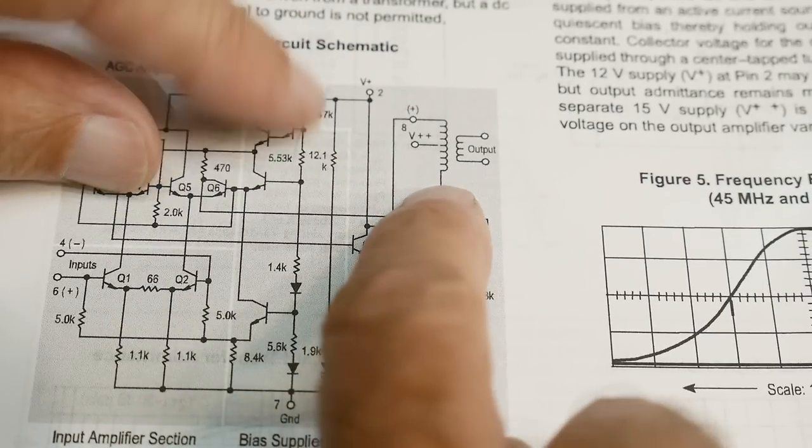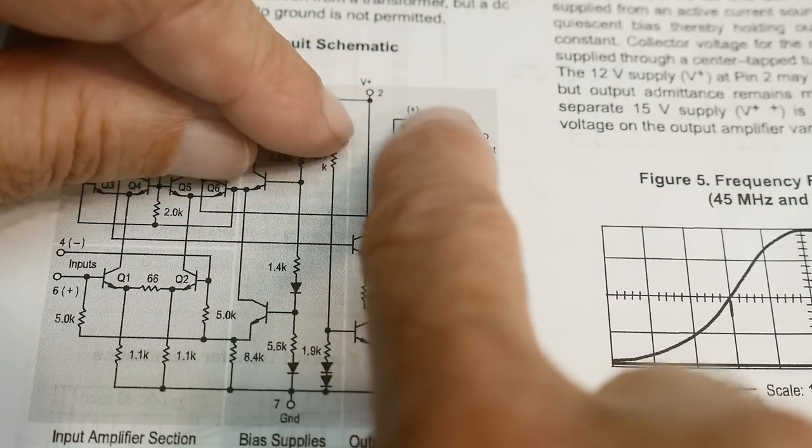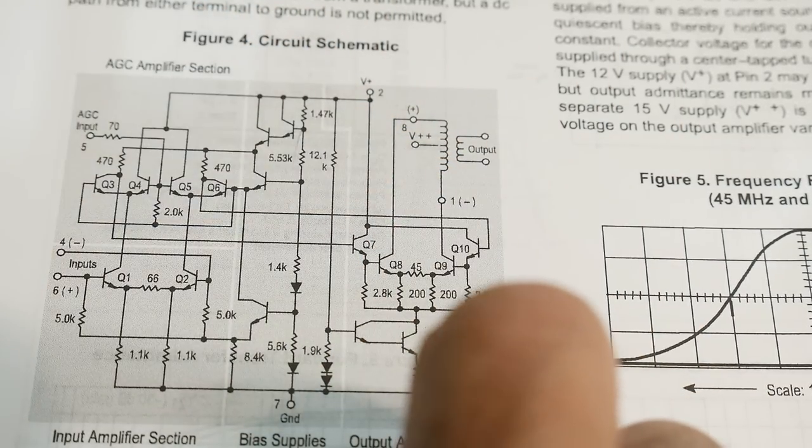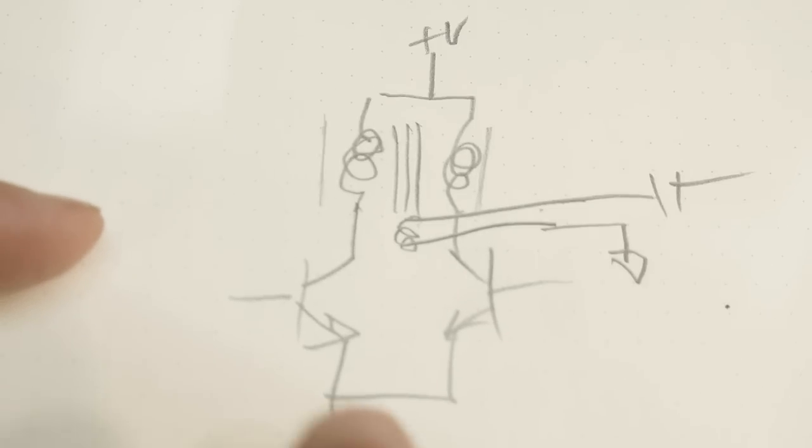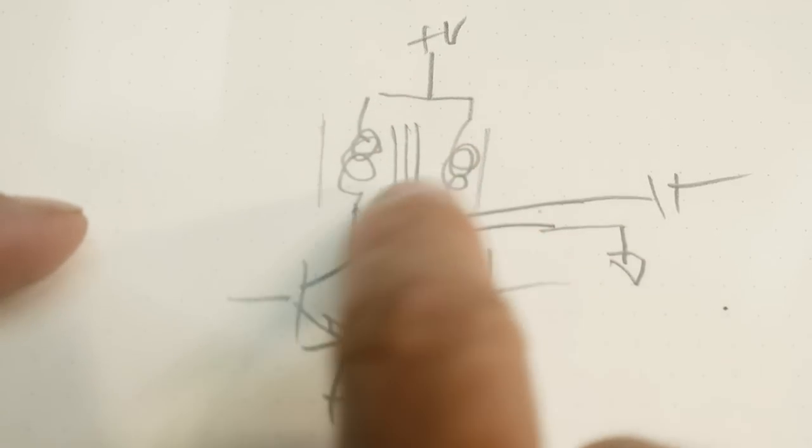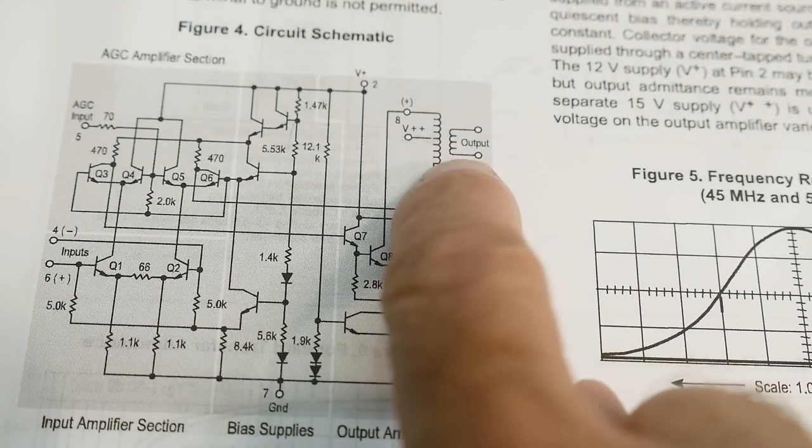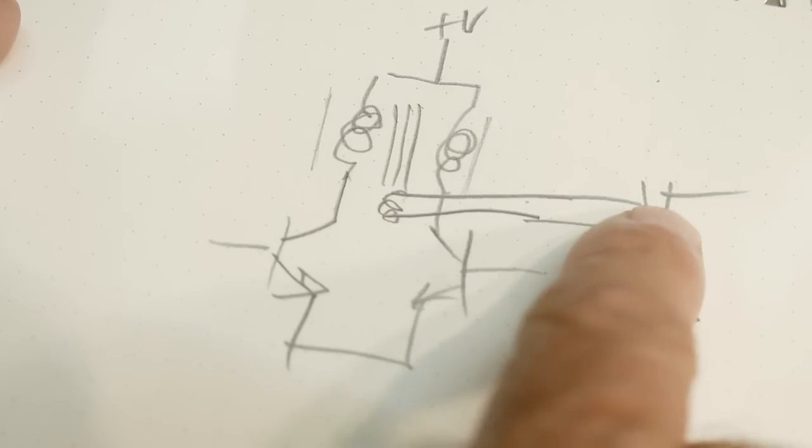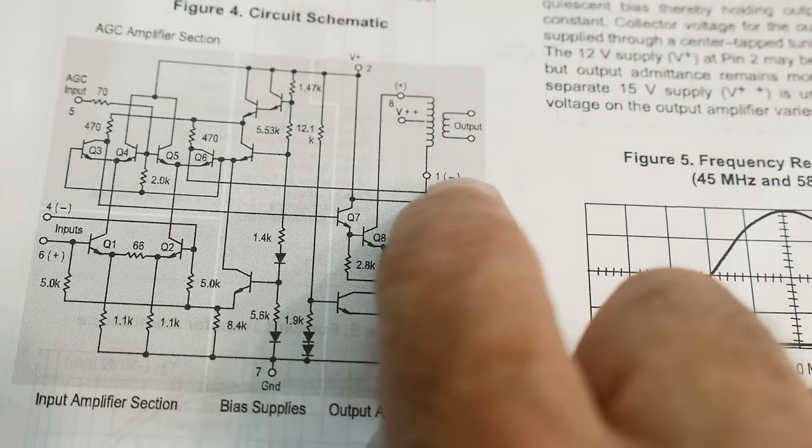They have a coil. It's got a center tapped winding to plus V. So, that's what I have here. It's a center tapped winding. Here's the center tap. Here's the winding. And then there's an output winding of smaller turns, and that's what I have drawn here. So, that's what they have going on here.